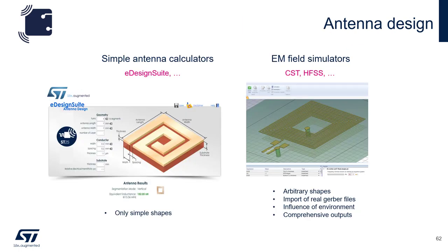ST has its eDesign Suite, which is a simple antenna calculator. By putting in the parameters for the geometry of your antenna, as well as the conductor and substrate, it will calculate the inductance of the antenna at 13.56 MHz. This can be used with very simple-shaped antennas. There are also third-party tools available if you want to import your own Gerbers.